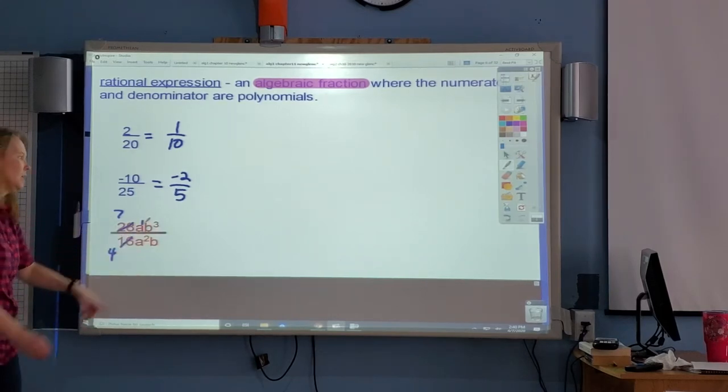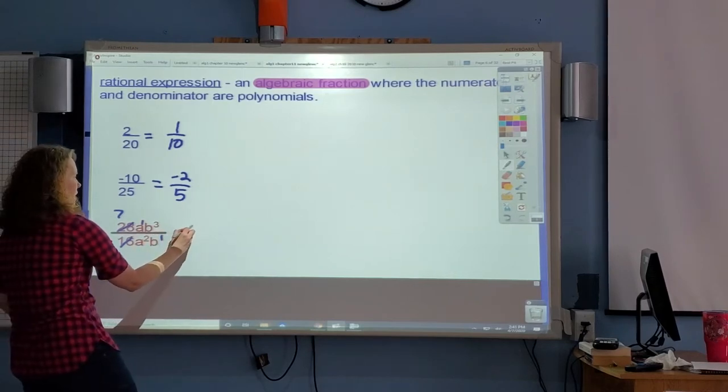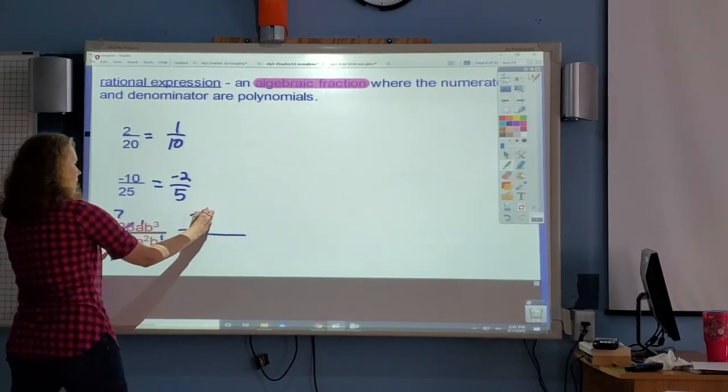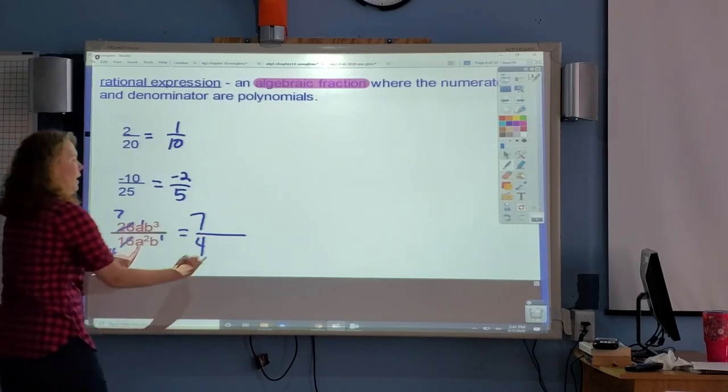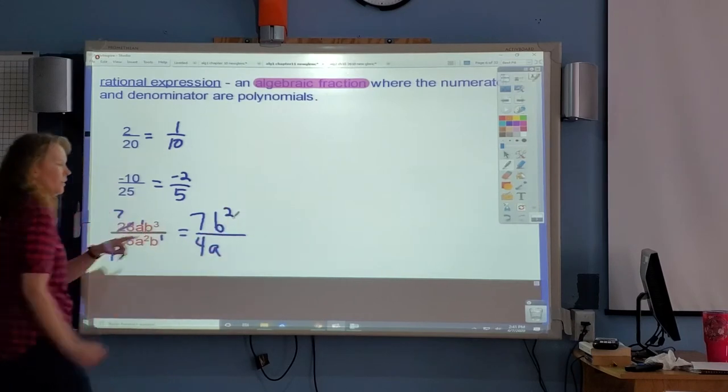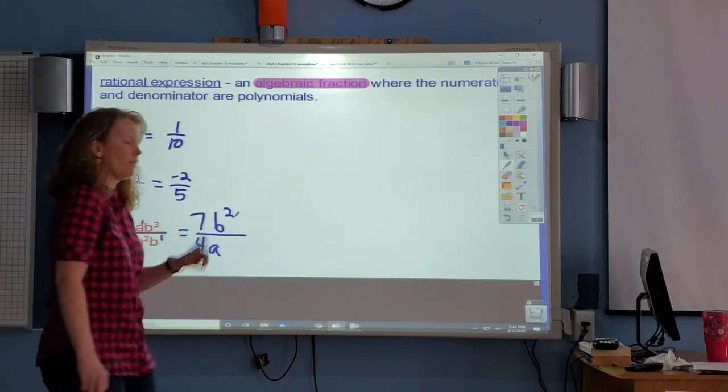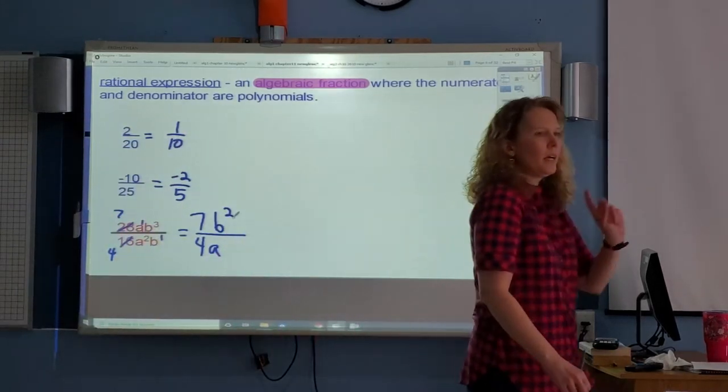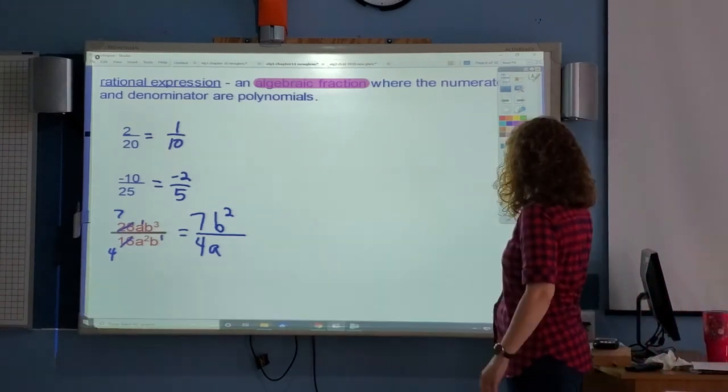Look at just the b's. This is b to the third, b to the first. Subtract them, but you're going to write your answer at the top because the 3 is the biggest. So here's the final answer: 7 on top, 4 on the bottom, a to the first on the bottom, and b to the second on the top. So that is an algebraic fraction reduced. Double-check it. Make sure you only have one variable of each type, and make sure those coefficients are completely reduced.